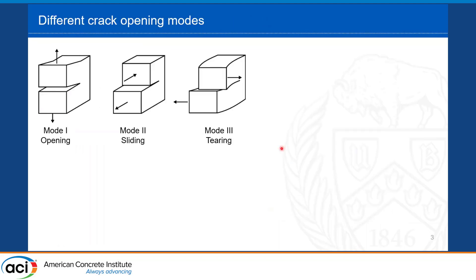In general, when cracks open and propagate there are three modes of crack opening. The first mode is when the crack is subjected to normal loads perpendicular to the crack direction — pure tension. The second case is when the crack is subjected to forces parallel to the crack — the sliding mode. The third mode is when the crack is subjected to out-of-plane forces, producing tearing opening of the crack.